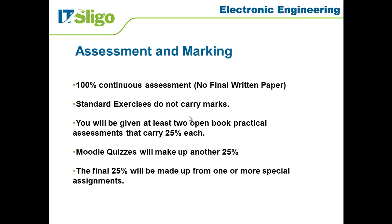There will also be 25% of the marks going for Moodle quizzes. Some quizzes will be formative assessment — just to see if you've understood the material — but there will also be summative assessment, where we use quizzes to actually mark you and give you credit towards your final score. We'll make you aware of which it is in each case. The final 25% of the marks will be given for one or more special assignments. The standard assignments don't carry marks, but these special assignments will make up that final 25%.